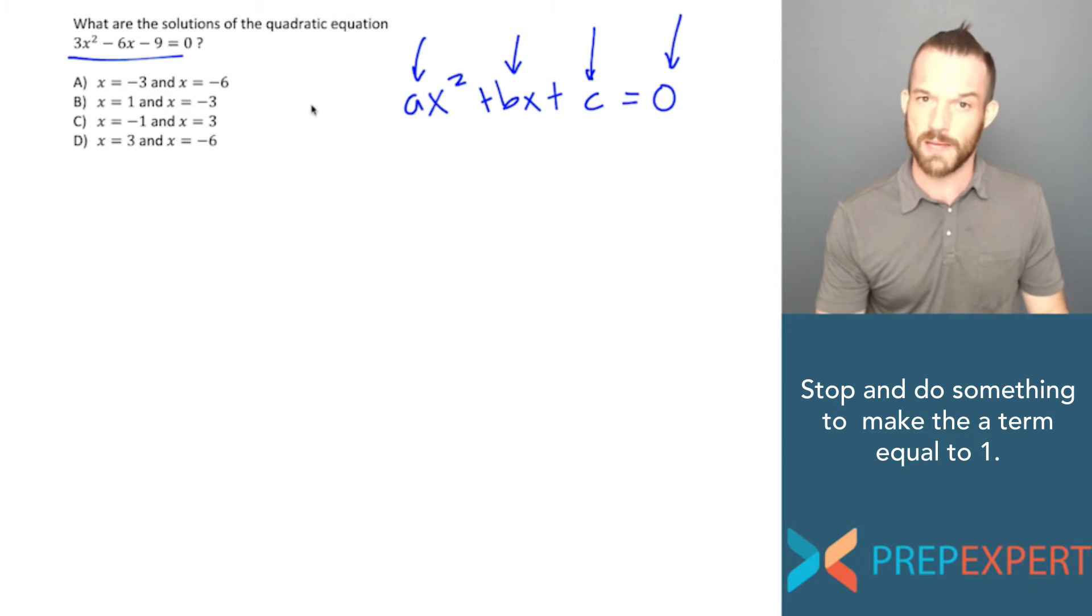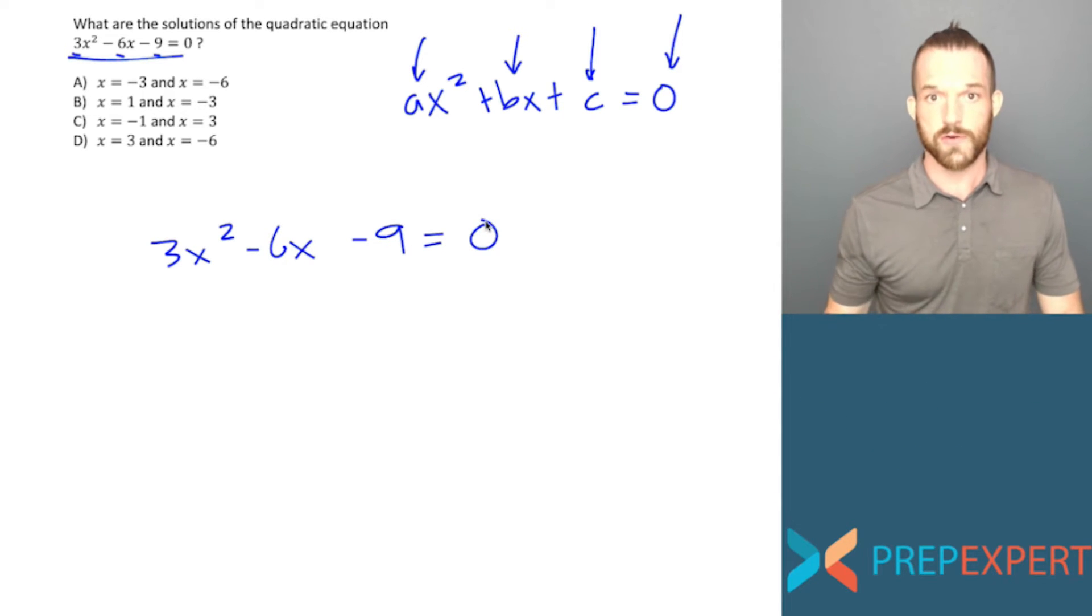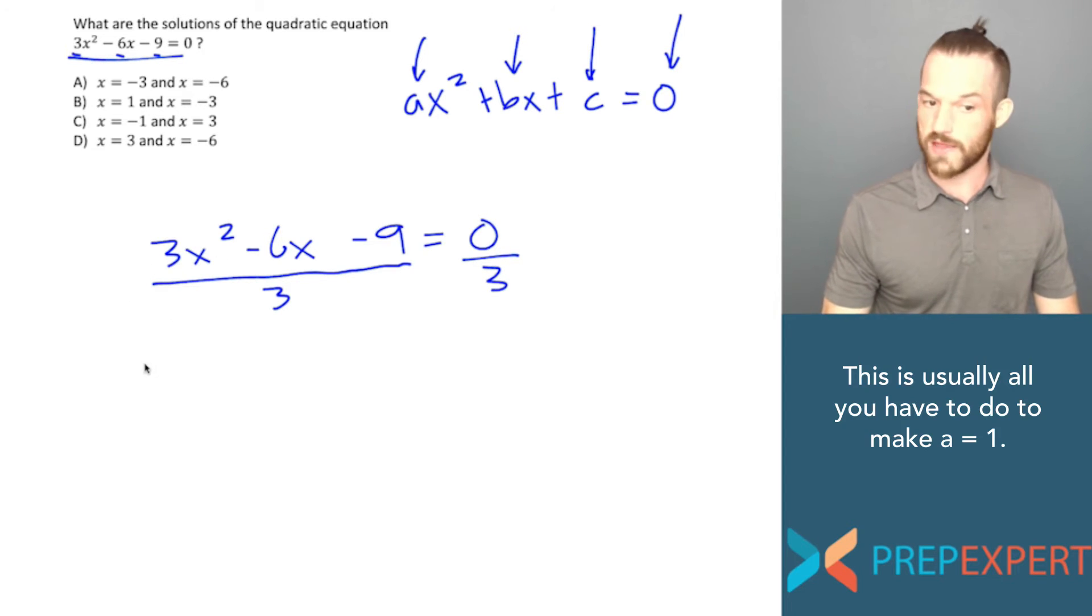So this a term is not equal to one. So you might be thinking, man, this problem asked me to factor a quadratic whose a term is not equal to one. But actually, there's a first step we can take that will simplify this factoring process a lot. And that is to pull the common factor out of all of these terms. In other words, 3x squared minus 6x minus 9 equals zero. Yeah, for sure. But each of these constants is actually divisible by three. So what I can do here is just divide both sides of this equation by three before I even get started. 3x squared divided by three is just x squared. Negative 6x divided by three is negative 2x. And negative 9 divided by three is negative 3. Zero divided by three is just zero.